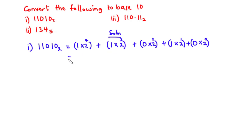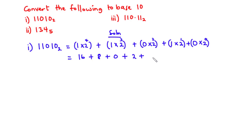Now let's simplify. 2⁴ is 16 times 1 is 16. 2³ is 8 times 1 is 8. 2² is 4 times 0 is 0. 2¹ is 2 times 1 is 2. And 2⁰ is 1 times 0 is 0. Adding these up: 8 plus 2 is 10, and 10 plus 16 is 26. Therefore, 11010 base 2 is equal to 26 base 10.